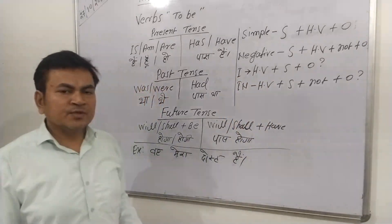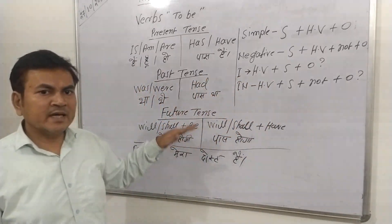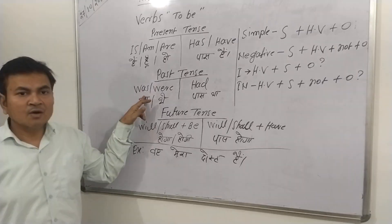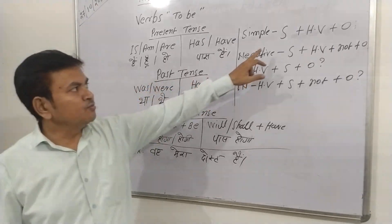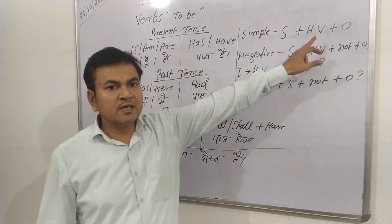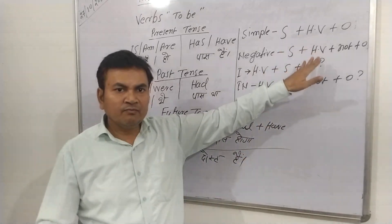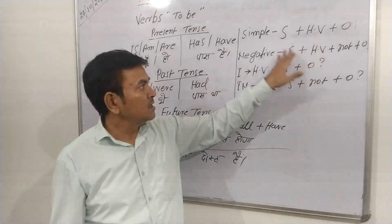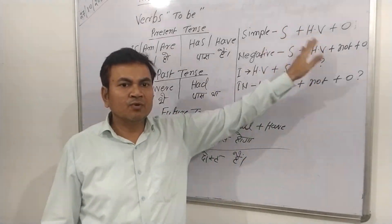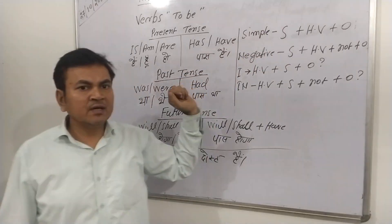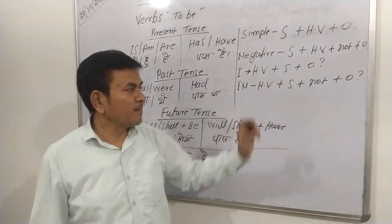If you take the same sentence to past tense, 'is' will be replaced by 'was'. So the sentences become: 'he was my friend', 'he was not my friend', 'was he my friend?', and 'was he not my friend?'